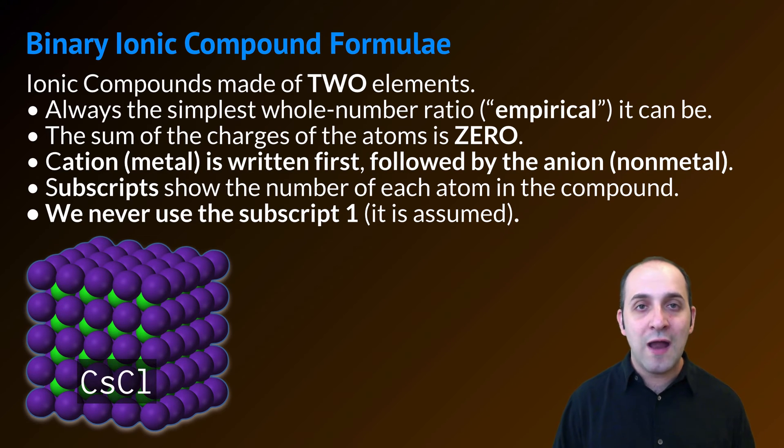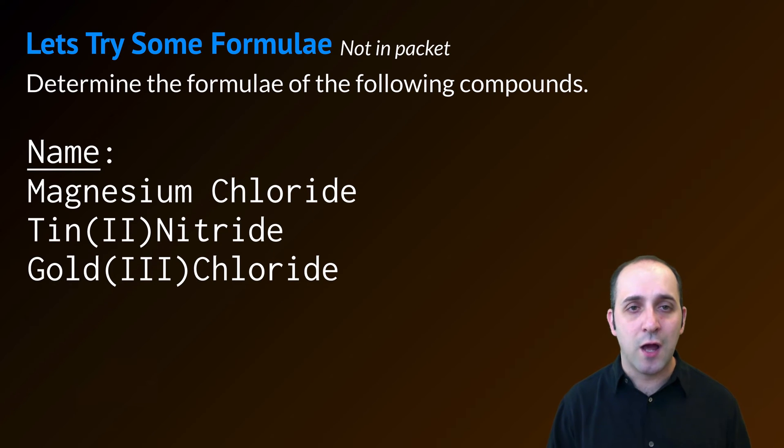This is cesium chloride. Its compound formula is CsCl. Even though it goes on forever, there's one cesium and one chloride ion together in this compound. Let's go and look at some examples of formulating binary ionic compounds. These are not in your packet. I'd like you to determine the formula of the following compounds: magnesium chloride, tin 2 nitride, and gold 3 chloride. Pause the video and try it on your own before we work through it together to see if you can do it and then maybe we can just move on.